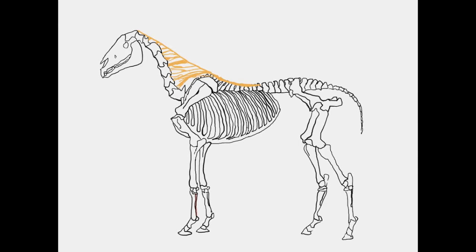Today we are looking at an equine skeleton with particular interest in the thoracic limb. We're going to run through the muscles of the thoracic limb, but before we do let's get oriented.